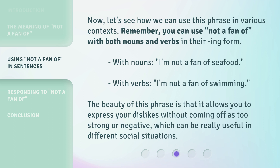Now let's see how we can use this phrase in various contexts. Remember, you can use 'not a fan of' with both nouns and verbs in their -ing form. With nouns: 'I'm not a fan of seafood.' With verbs: 'I'm not a fan of swimming.' The beauty of this phrase is that it allows you to express your dislikes without coming off as too strong or negative, which can be really useful in different social situations.